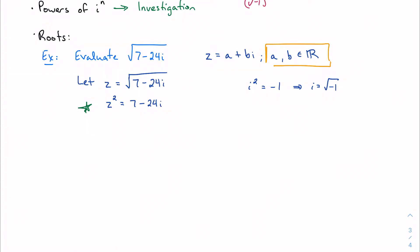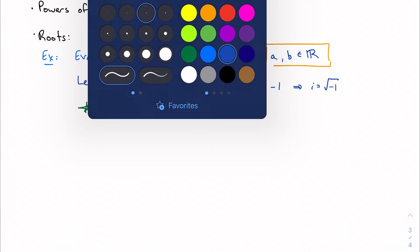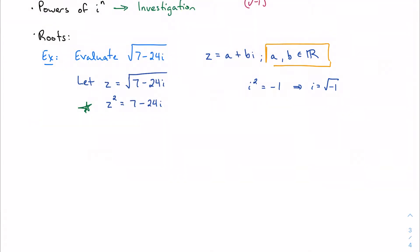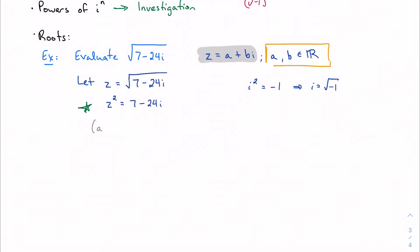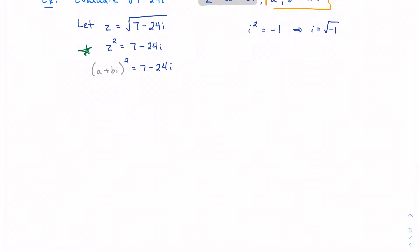Our next step is to take this even farther and say, if z is a plus bi, as we know, then I can rewrite z as (a + bi) squared equal to 7 minus 24i. And this is going to make it even easier to work with once I FOIL this out.